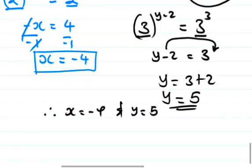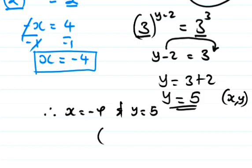Therefore x equals negative 4 and y equals 5. In coordinate form, this is represented as (x, y) = (negative 4, 5).